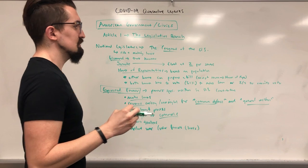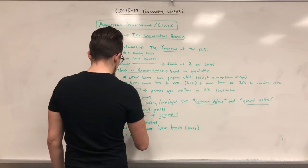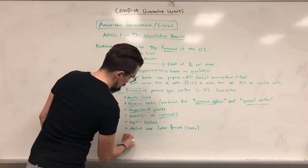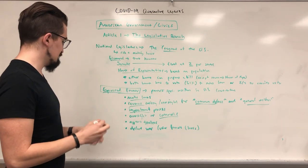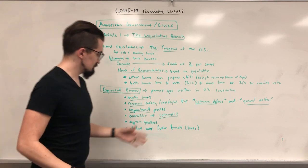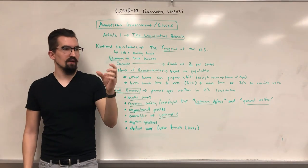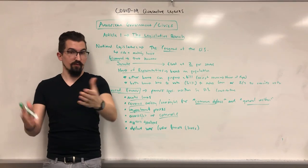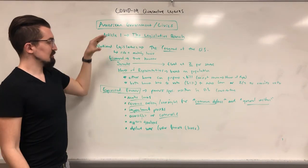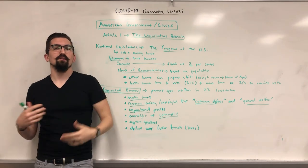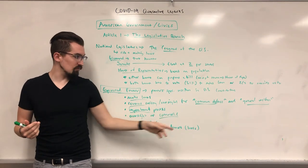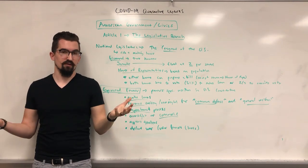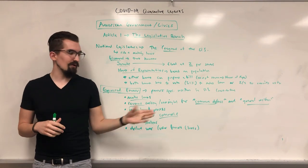Those are the expressed powers, because they're written specifically in Article 1. Article 1 has a bunch of clauses — little sections that give Congress these specific powers. When you hear terms like the Commerce Clause or the War Powers Clause, they're referring to a specific portion of Article 1 of the Constitution, such as Article 1, Clause 8 — a specific power written in there for Congress.